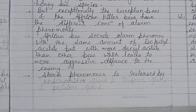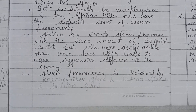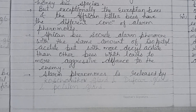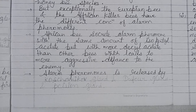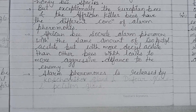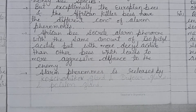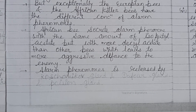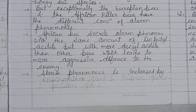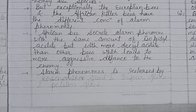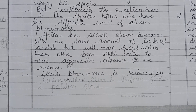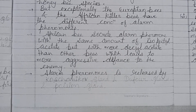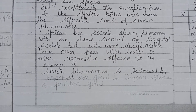Alarm pheromone is released by worker bees to alert other bees of danger, and it is released when a bee stings another animal. This pheromone attracts other bees to the location and causes them to behave defensively — to sting or charge. Smoke can also mask the bee's alarm pheromone.